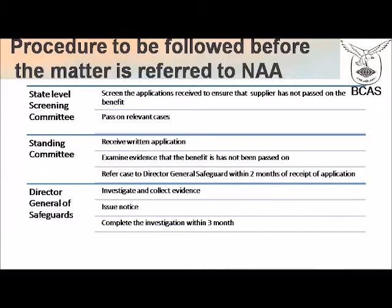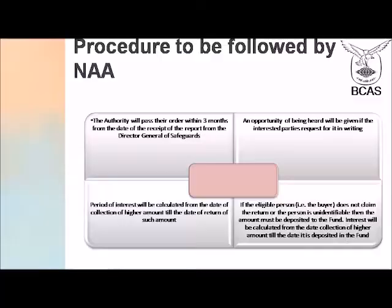The Director General of Safeguards thereafter investigates and collects evidence and documents on any item wherein the profits have not been passed on. He issues notices to the interested parties and is expected to complete the investigation within a period of three months. Once the investigation is completed, he gives the investigation report to the authority. The authority will thereafter pass their order within three months from the date of receipt of the report from the Director General of Safeguards.